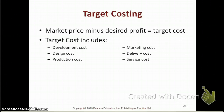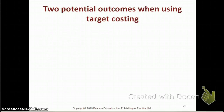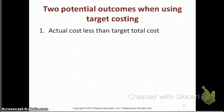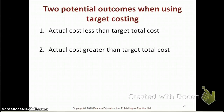The target cost includes all the elements of your value chain — all costs incurred across every element. There are two potential outcomes when using target costing. The first outcome is that actual costs are less than target costs, which is great — you will make more profit than your target. The second outcome is that actual costs are greater than your target costs, in which case you have a problem and will not meet your target profit.